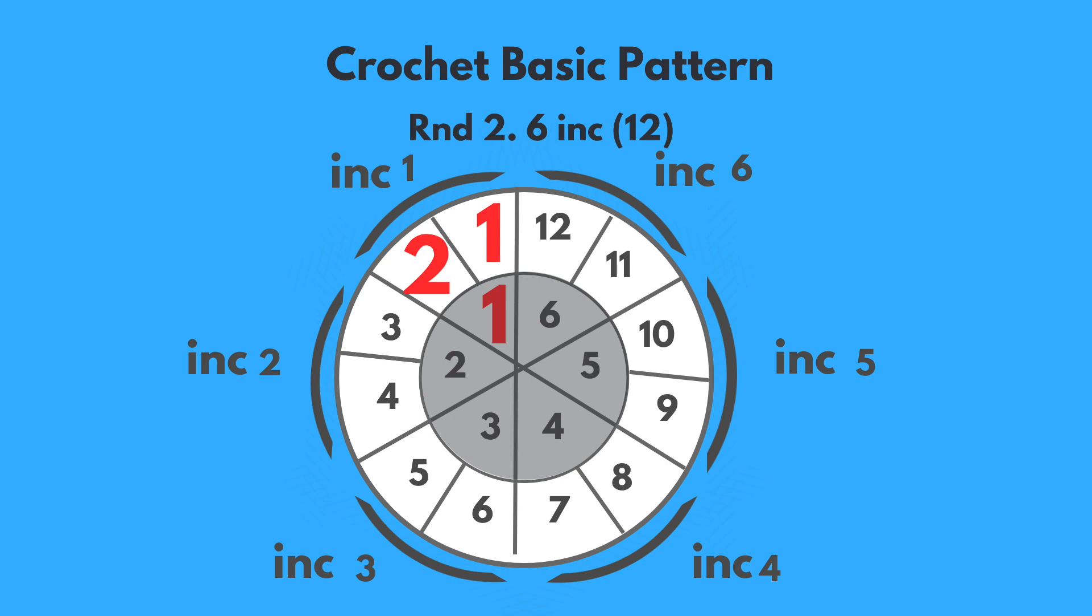The number in the parentheses on the right represents this count, which is the number of stitches or horizontal v's that we will have when we are done with this round.